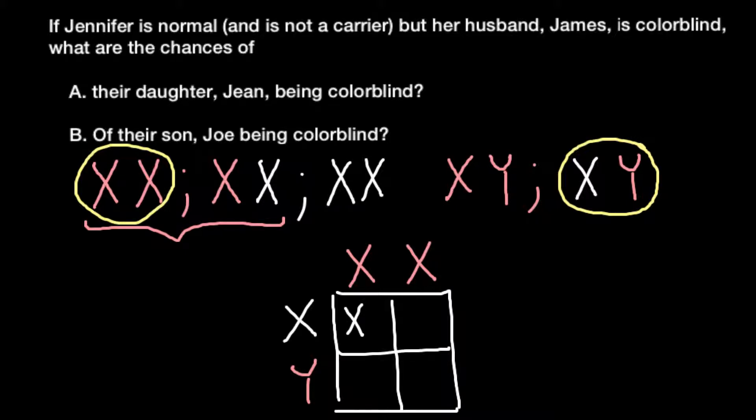Here we would have one female that is going to be a carrier. Here we would have also a female who is going to be a carrier. Here we would have a phenotypically normal male, and here we also would have a phenotypically normal male.